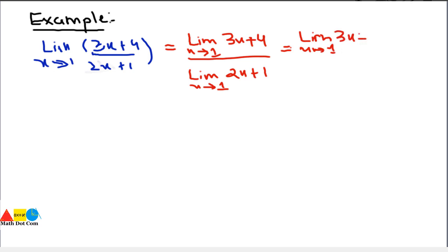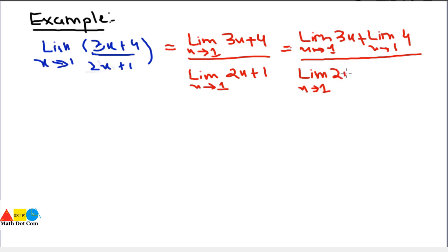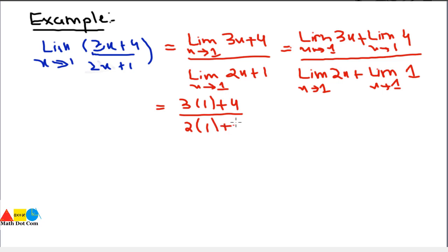We expand using the sum theorem: [limit as x→1 of 3x + limit as x→1 of 4] divided by [limit as x→1 of 2x + limit as x→1 of 1]. Putting x = 1: (3×1 + 4) / (2×1 + 1) = (3 + 4) / (2 + 1) = 7/3. This is how you evaluate a function using the theorem for the quotient of two functions. Keep in mind the denominator must not equal zero to avoid an undefined function.